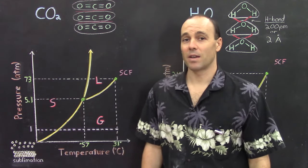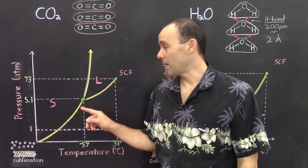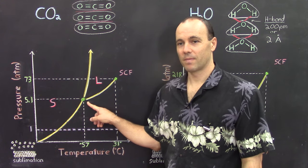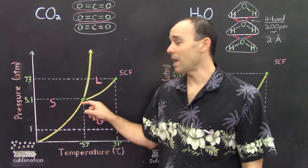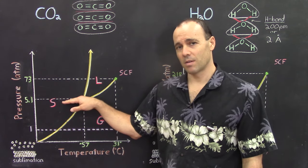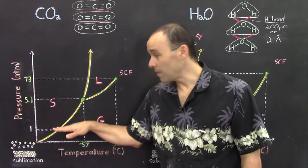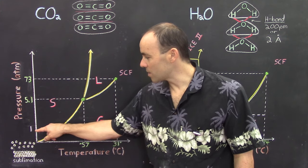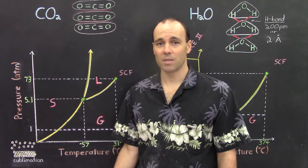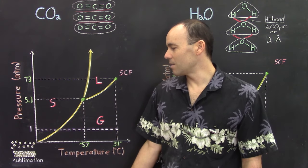Let's take a look at the phase diagram of carbon dioxide. There are a few important differences between carbon dioxide's and water's phase diagram. The first one is the location of the triple point. The triple point for carbon dioxide occurs at a pressure of 5.1 atm and a temperature of negative 57 degrees Celsius. The main thing to notice is the pressure — it's above atmospheric pressure. So for carbon dioxide under atmospheric conditions of one atmosphere, we see the solid can pass directly into the gas phase — and you probably remember that dry ice is solid carbon dioxide subliming into the gas phase.